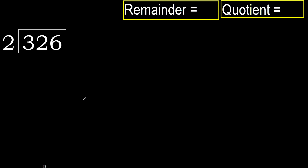326 divided by 2. 3 is not less, therefore with 3: 2 multiplied by which number is nearest to 3 but not greater? 2 multiplied by 2 is 4 — 4 is greater. 2 multiplied by 1 is 2, which is not greater. 3 minus 2 is 1.